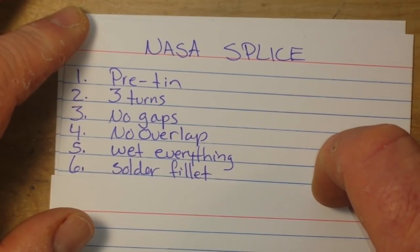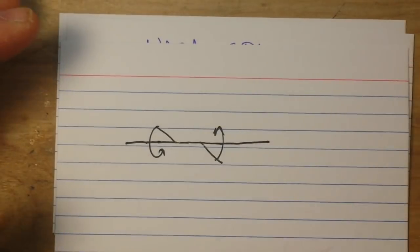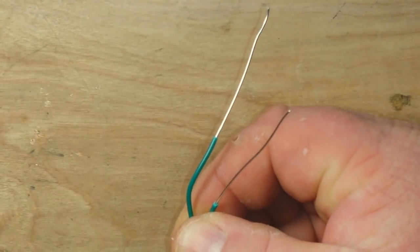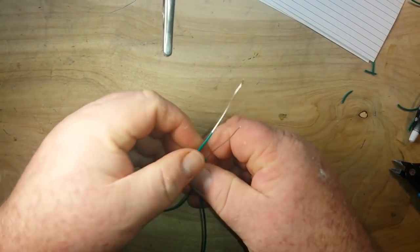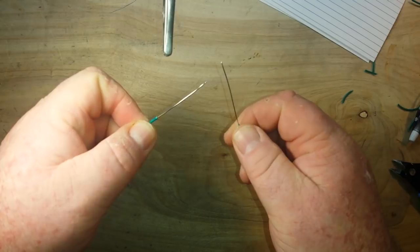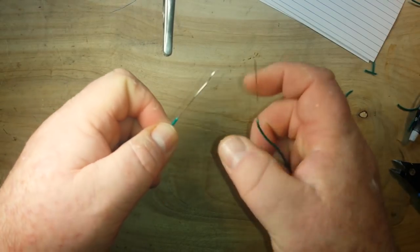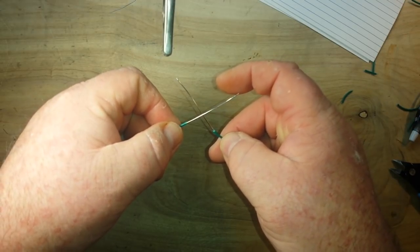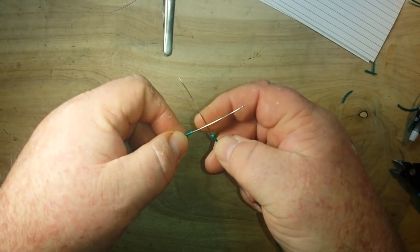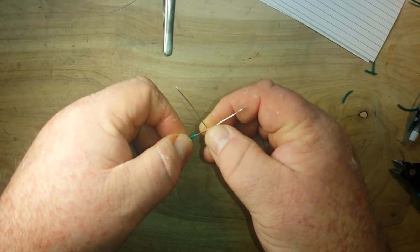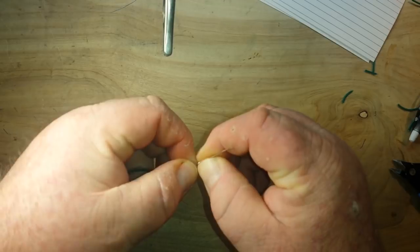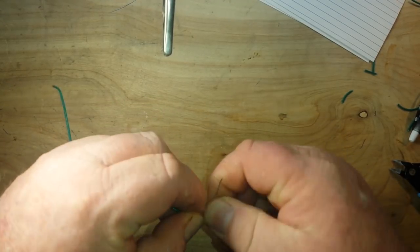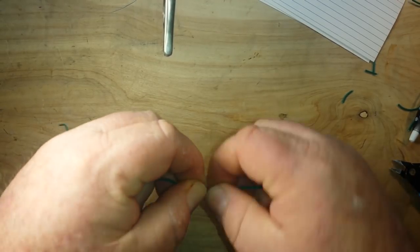So that being said, here is some 22-gauge solid core wire, and I have stripped it and tinned it. This is about two inches, about 50 millimeters or so. So you want to come about two-thirds up the length of the wire, and these are going to have to be even.